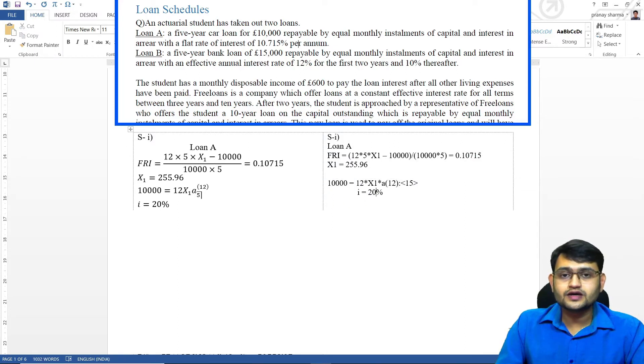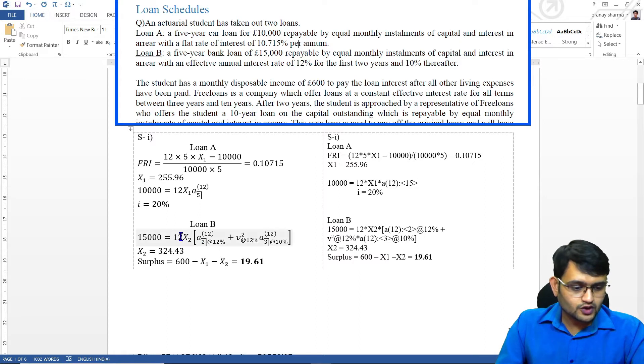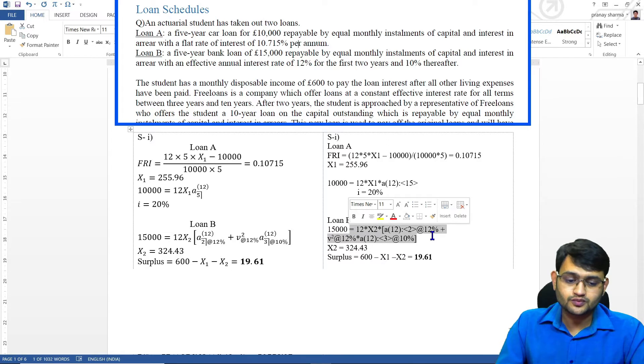We will have to find the loan repayment for loan B as well. For loan B we have two different rates of interest. So here our loan B is 15,000 equals 12x2, and I have two different annuities at two different rates of interest. So I have written the rate of interest here and similarly the equation of the loan is written here without equation editor. Now you can see it becomes a little bit complicated if we have a complicated formula. Here it is very easy to visualize, here it's not, but you can definitely write it without equation editor as well.